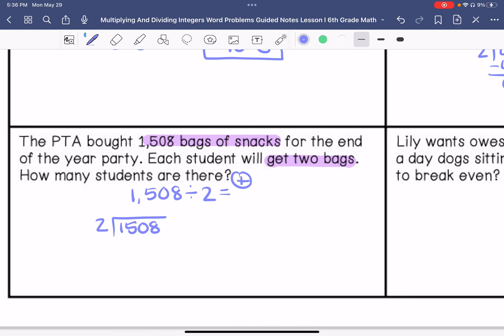So 2 goes into 15, 7 times. 2 times 7 is 14. Subtract that. Bring down the 0. 2 goes into 10, 5 times. Bring down the 8. 2 goes into 8, 4 times. 2 times 4 is 8. So there are 754 students.